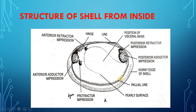Here you can see the paleal line running. Faint lines may also be seen converging from the muscle impressions to the umbo, indicating the gradual shifting of the body and muscles away from the umbo as the animal grows with age.